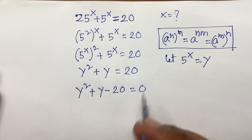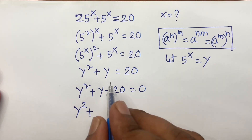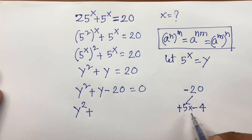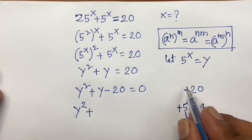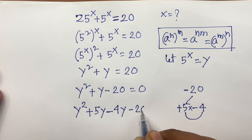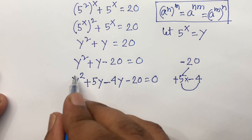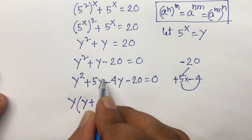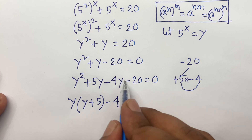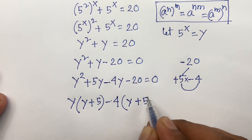Now I do factorization — middle term factorization. We have y² + y - 20, and -20 splits as +5 and -4, since 5 times 4 equals 20 and plus minus gives minus. So I write y² + 5y - 4y - 20 equals 0. Here y is common in the first two terms: y(y + 5), and 4 is common in the last two terms: -4(y + 5) equals 0.